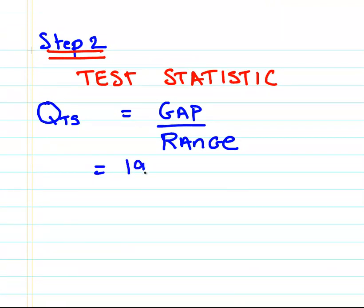So essentially, our test statistic is going to be 19 over 60. Very simple. 19 over 60. So you can work that out in your calculator. It is roughly equal to 0.32.